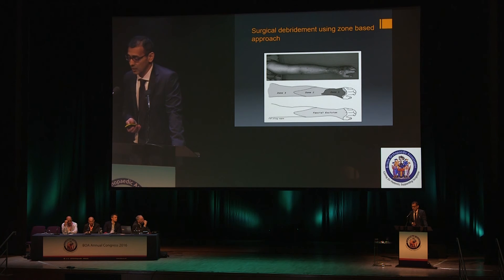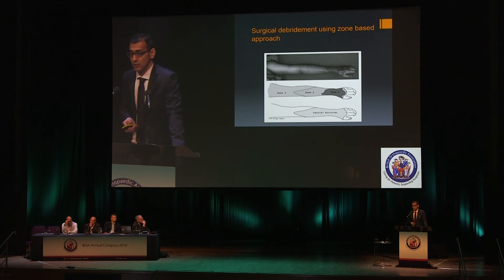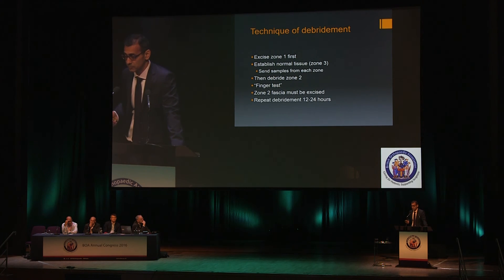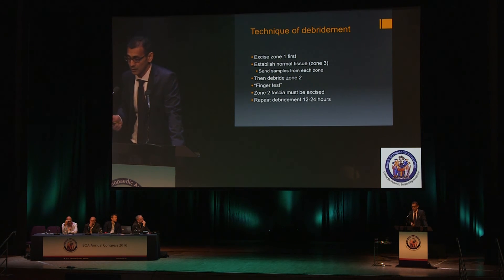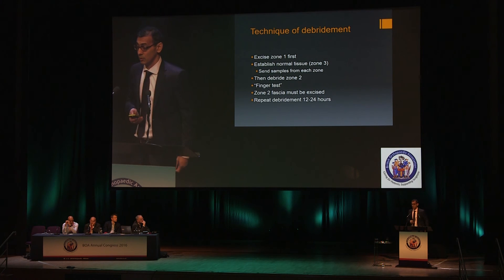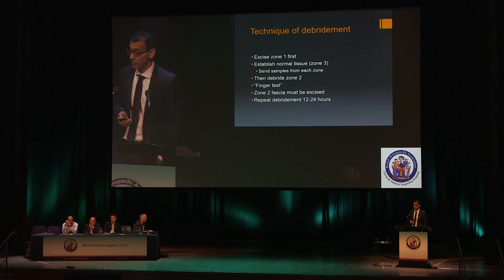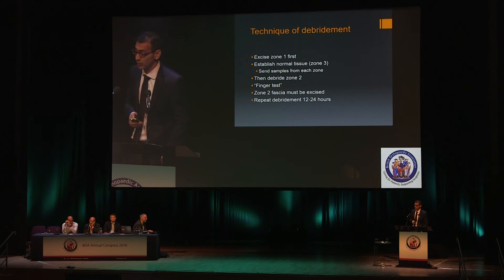I use a zone-based approach for my debridements — it was proposed by Wong in 2001. The area of necrosis is Zone 1. The area you believe is involved is marked as Zone 2. Zone 3 is perceived healthy tissue. You excise Zone 1 first, where most of the bacterial load is, then establish where Zone 3 is using exploratory incisions. If you have frozen section availability, use it, but regardless, send samples early — 10 hours down the line you'll want to know whether something's growing in Zone 3.